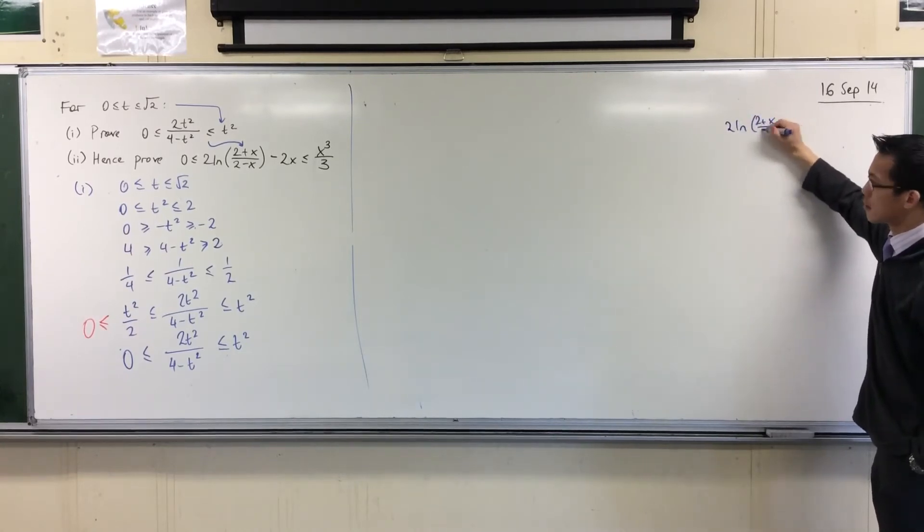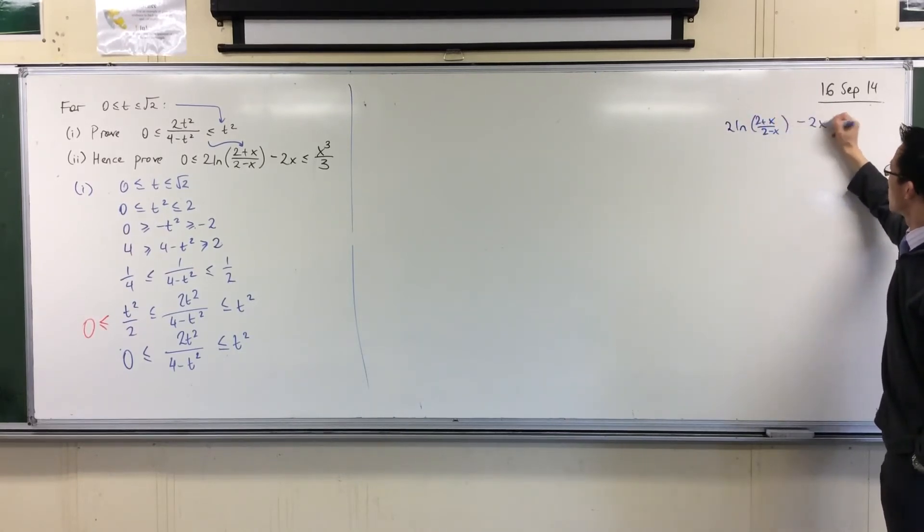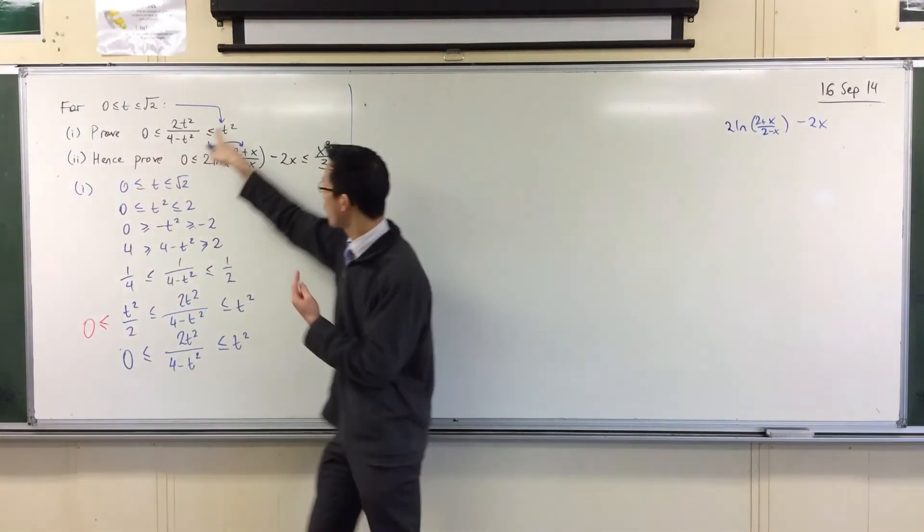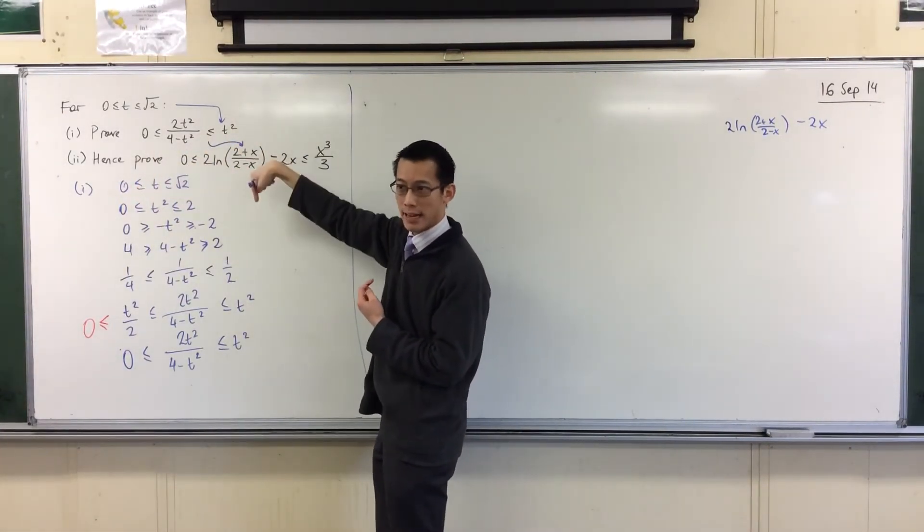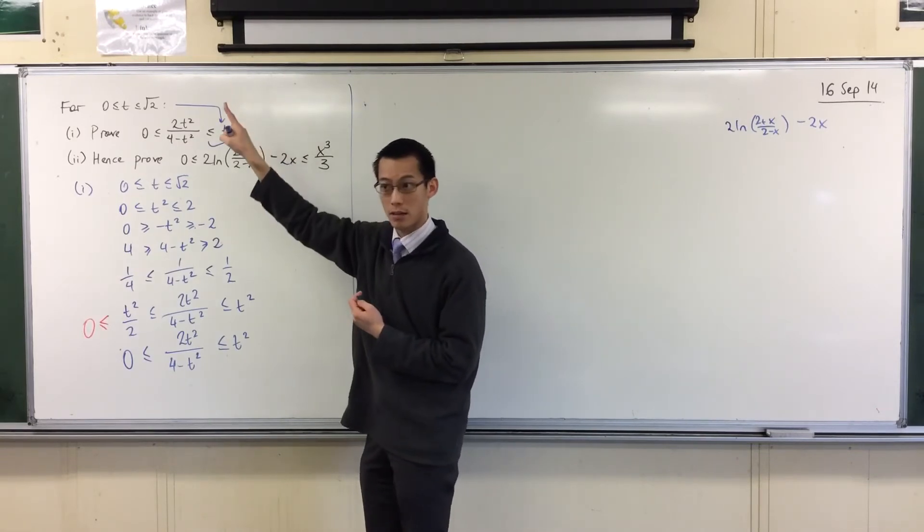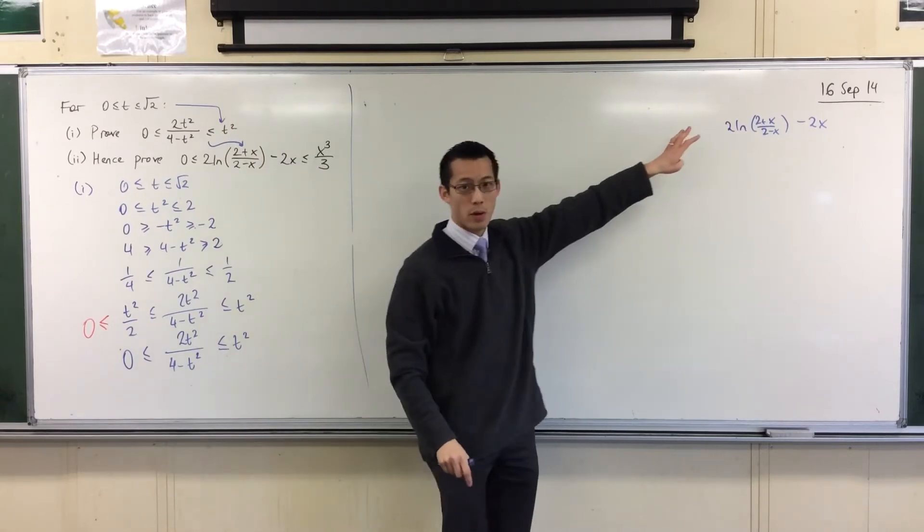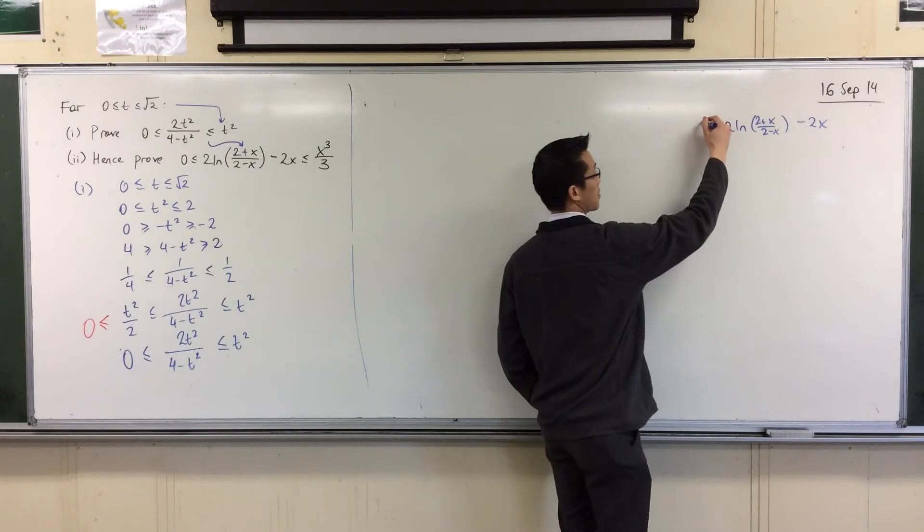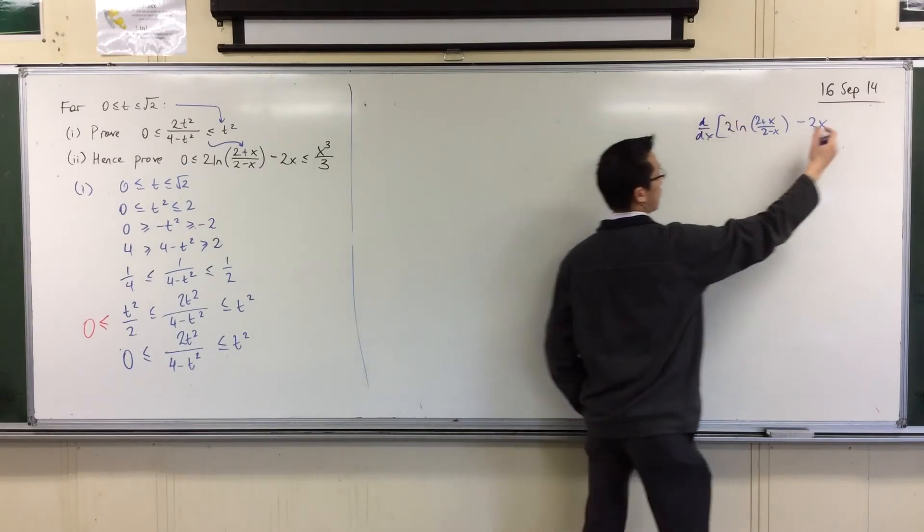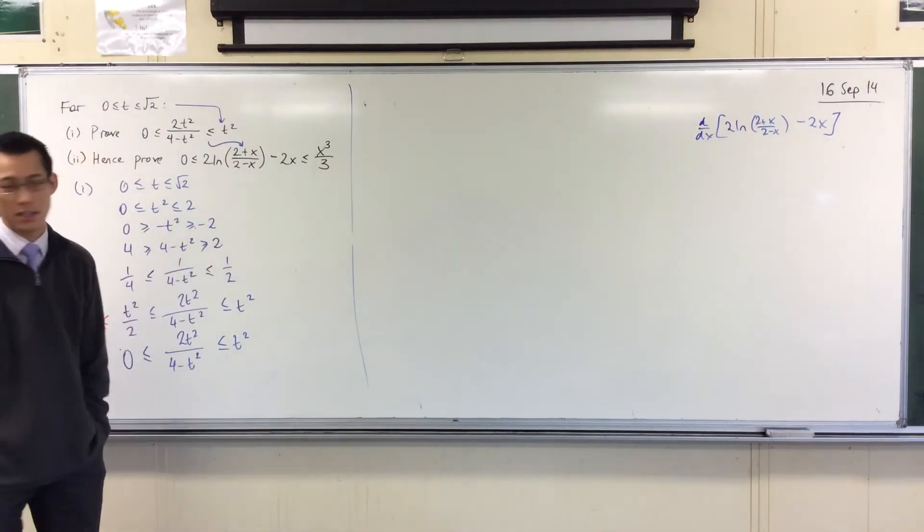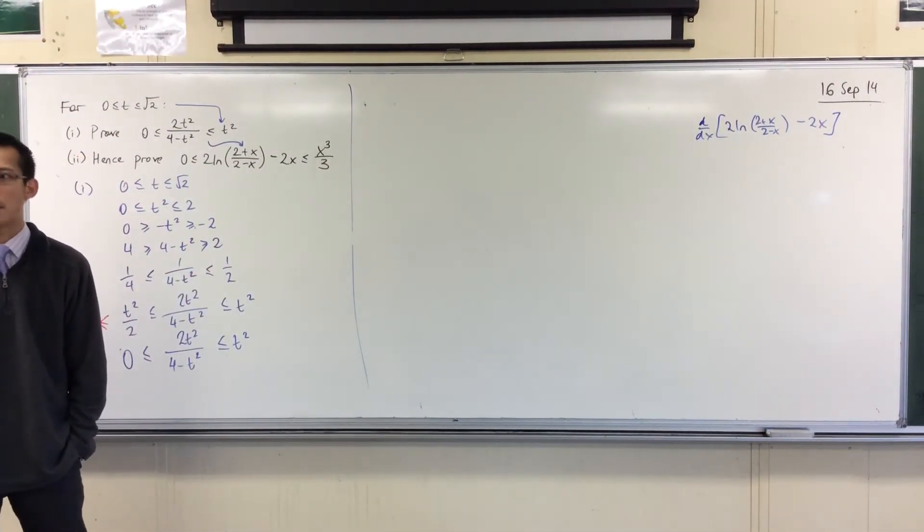So if you're going from here to here by integrating, then in order to think backwards, then you would be differentiating, right? Now, what's the quickest way to get from there to there by differentiating? Well, if I just slap this on the front, right? If I asked you if this had nothing to do with inequalities, right? And you just had to differentiate that, what would you do? What would be the first thing that you do? The log.